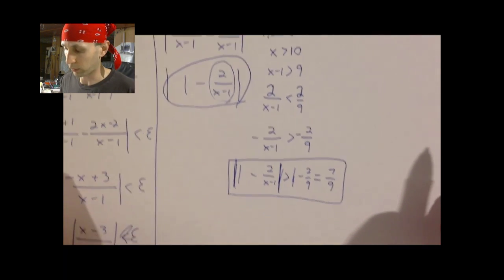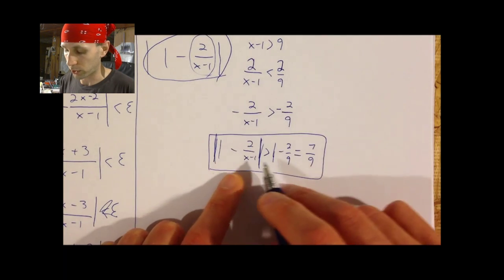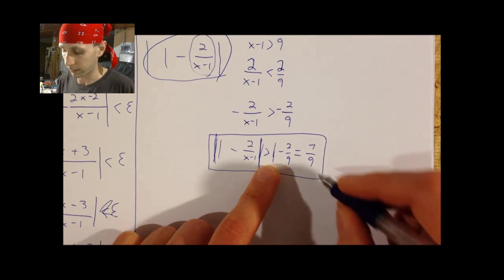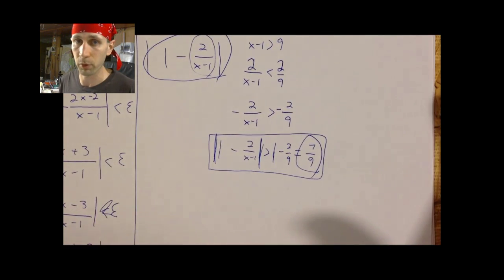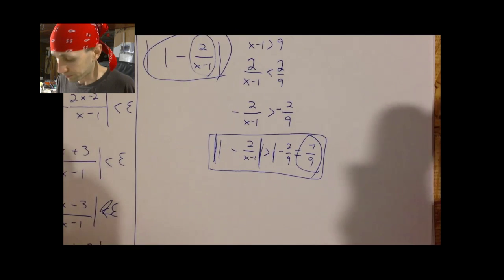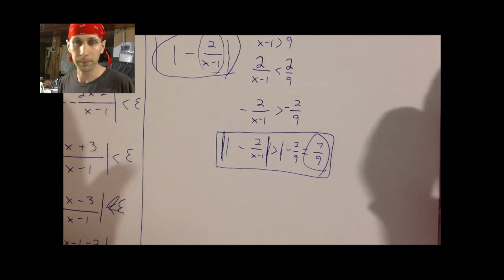Once you show that this can't be made less than some positive number — no matter how small — you're all finished. That's an example of where one of the proofs does not work. If you're actually trying to prove something that's wrong, that's where it's going to break down.